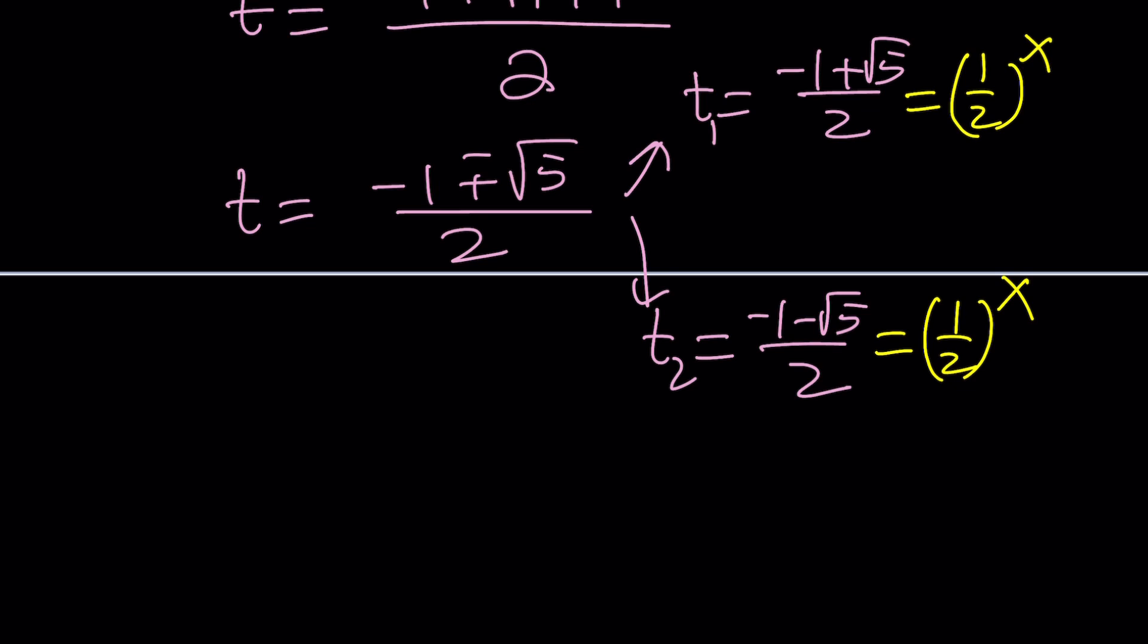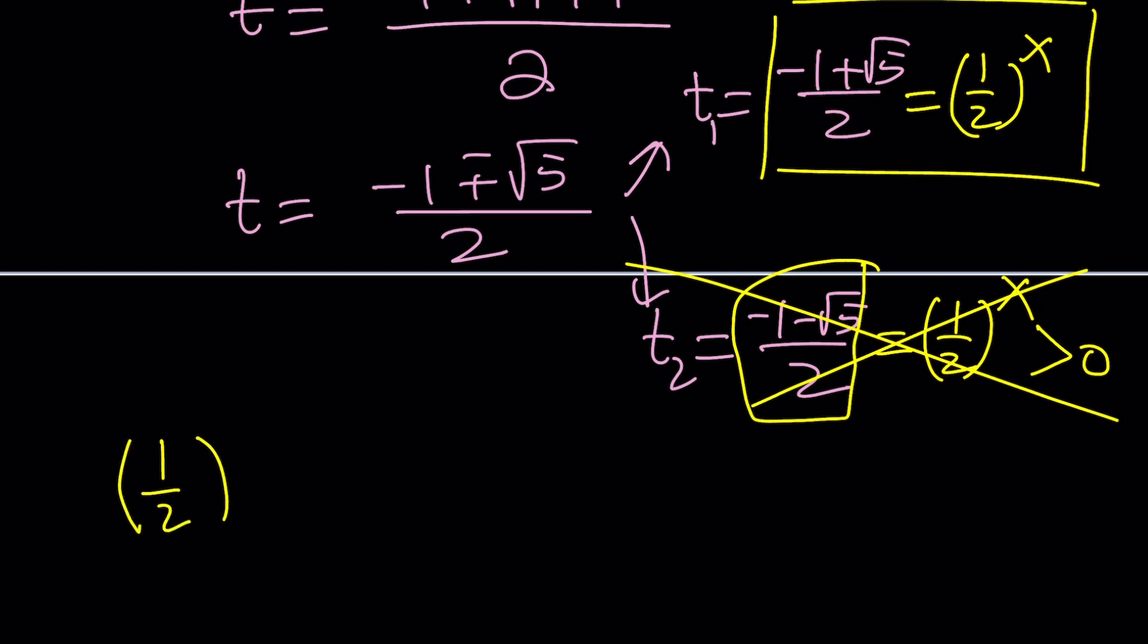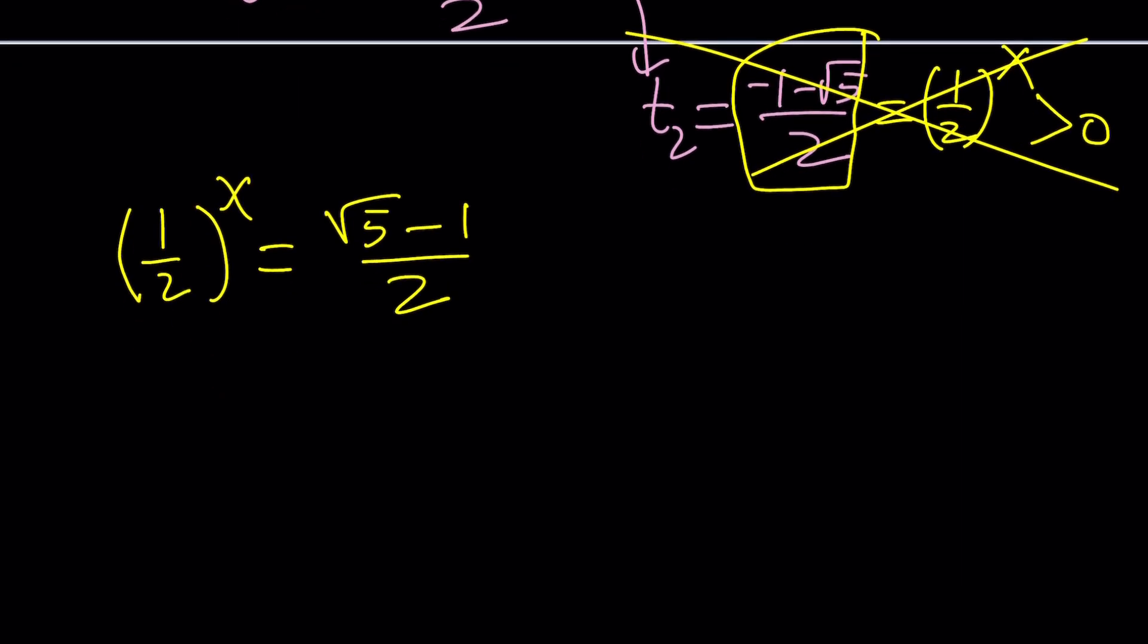Now what does this mean? Well, first of all, (1/2)^x is always positive. So this is a negative quantity. Houston, we have a problem. That can't be happening. We're going to discard that. Even though t is a real number, it is not positive. It has to be positive if we're looking for real solutions. So from here, we get (1/2)^x = (√5 - 1) / 2. I'd like to write it that way, it just looks better.